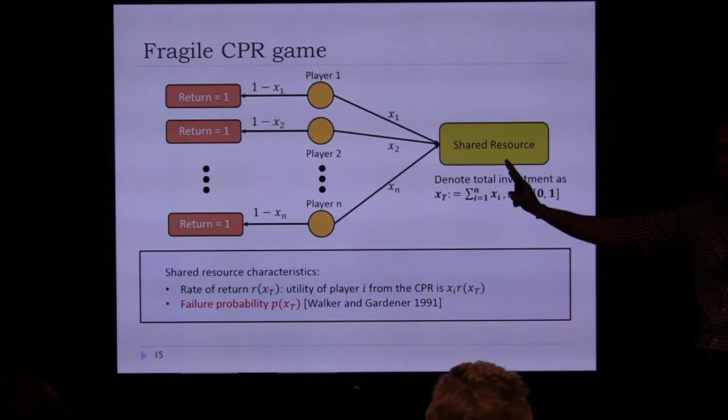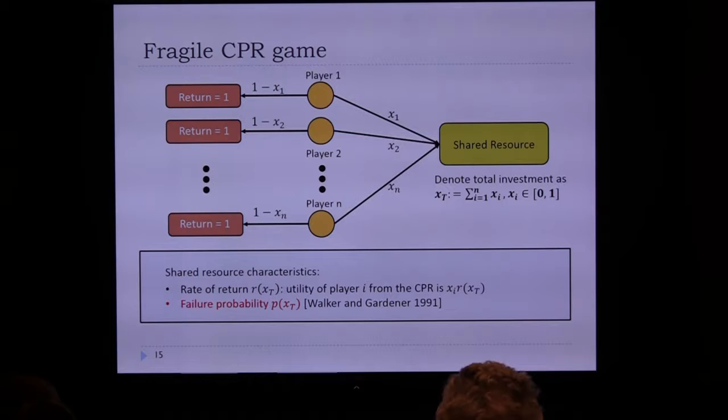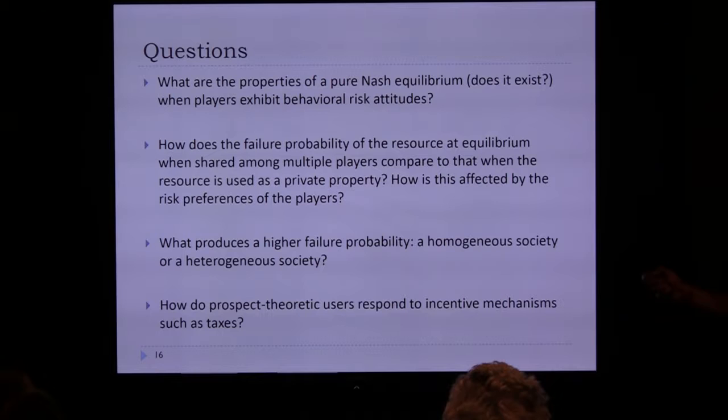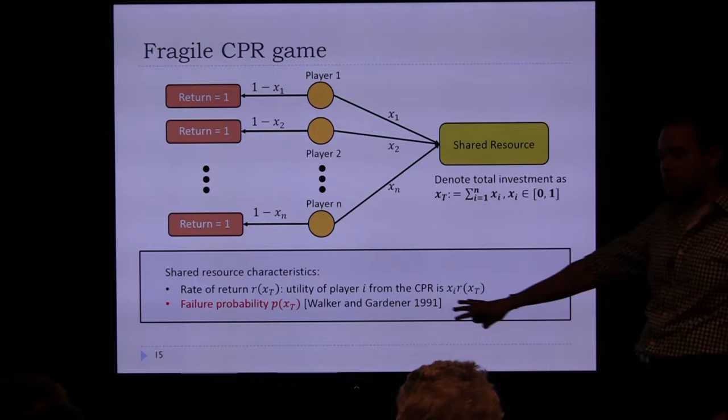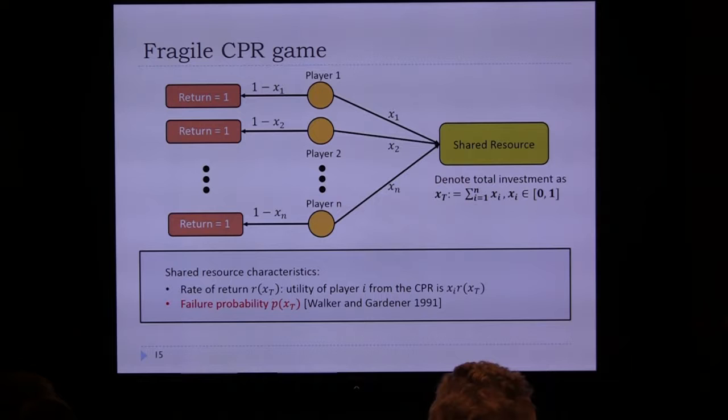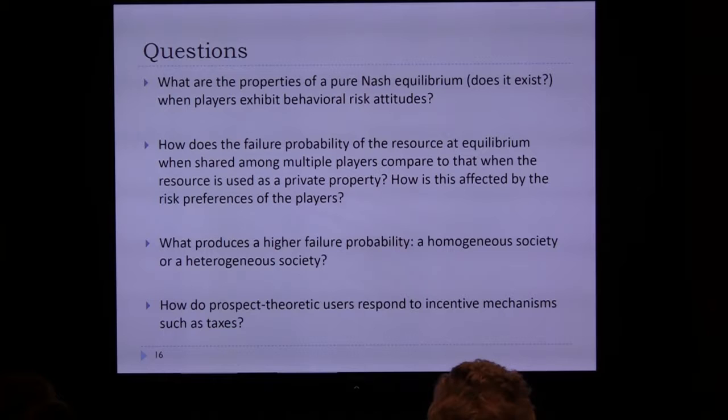R can be either increasing or decreasing in x_T — both cases are considered. Within this framework we ask: does a Nash equilibrium exist when players have prospect-theoretic perceptions of the resource? There's uncertainty about gains from the resource and probability of failure. Supposing players have these behavioral perceptions, what are the impacts? The answer: a Nash equilibrium does exist.